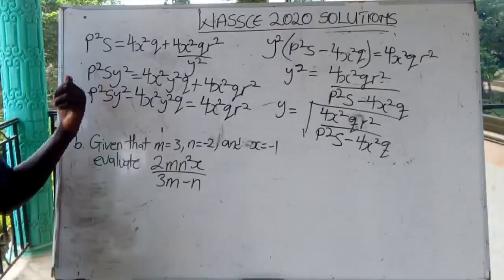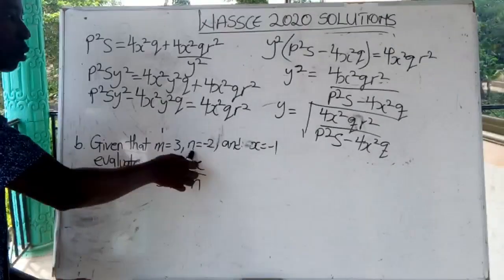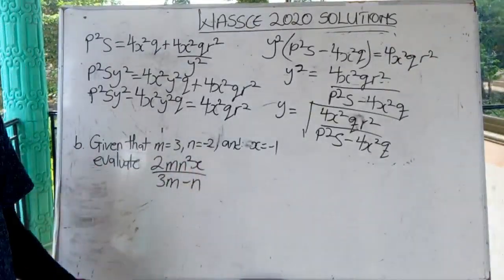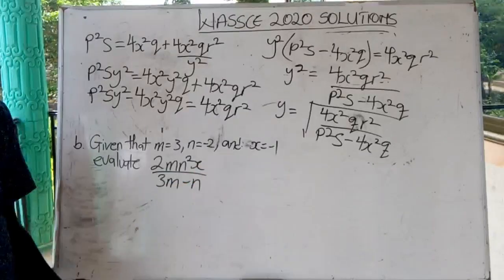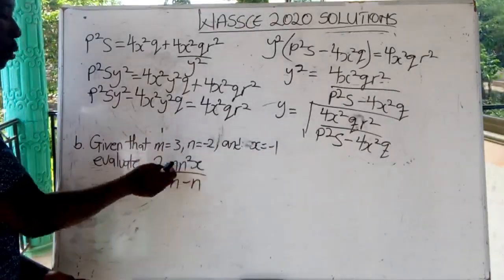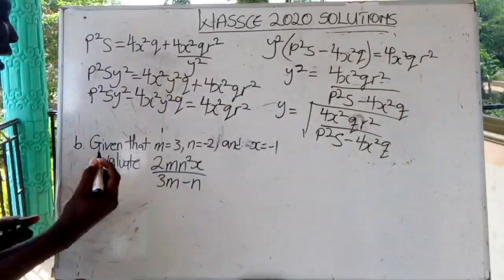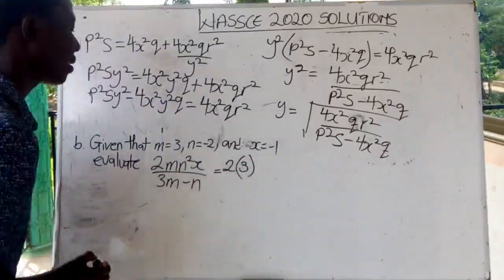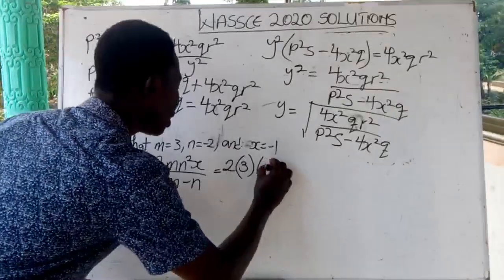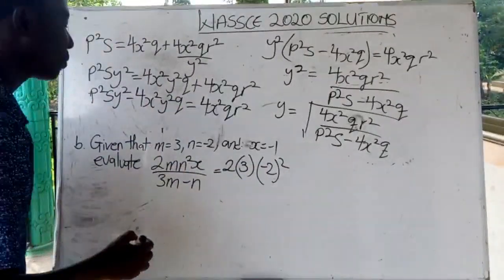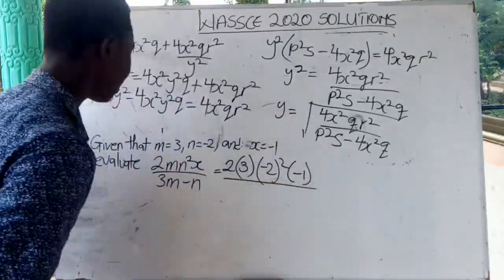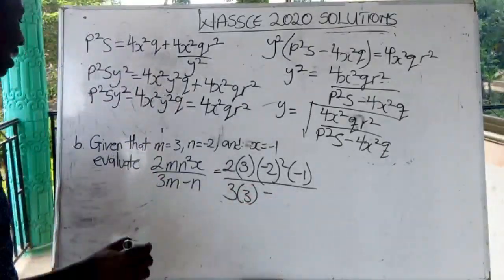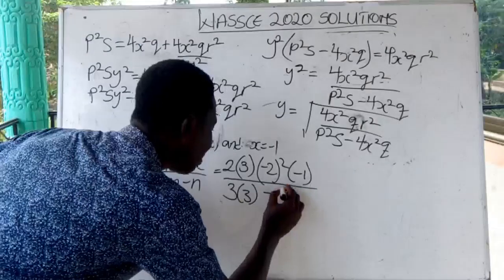Now we move on to part b. We are given m is equal to 3, n is equal to minus 2, and s is equal to negative 1. We have to evaluate the expression, so we substitute the values of m, n, and s. So we are going to get: 2 times m which is 3, then n is minus 2, minus 2 squared plus n squared over s which is minus 1, all over 3M — M is 3 — minus N — N is minus 2 — minus 2.